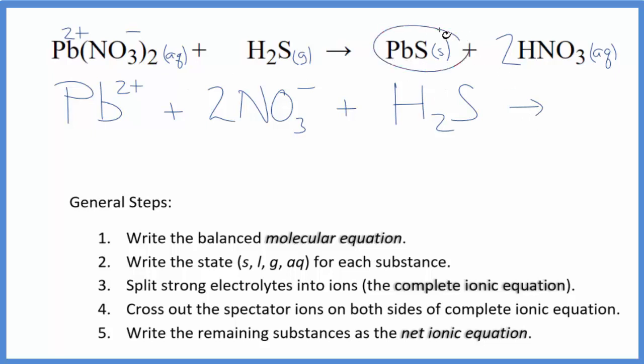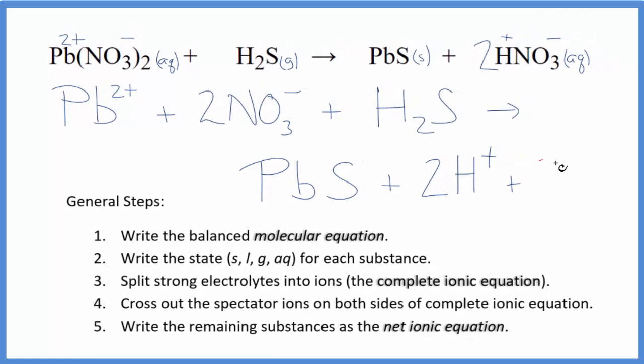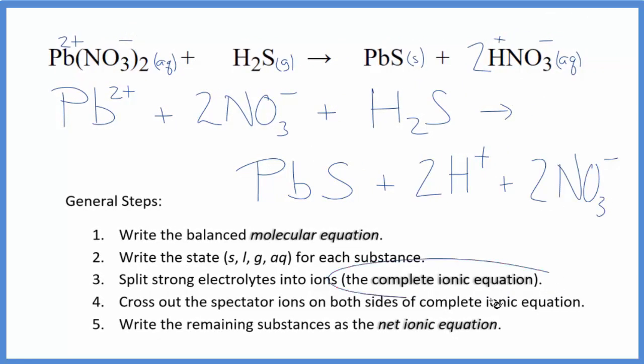For the products, we don't split solids apart either. So this is just going to be PbS. Plus, hydrogen group 1 has a 1+ ionic charge with a nitrate. We said 1-. 2 hydrogen ions and then 2 nitrate ions. And this is the complete ionic equation for lead(II) nitrate plus hydrogen sulfide gas.